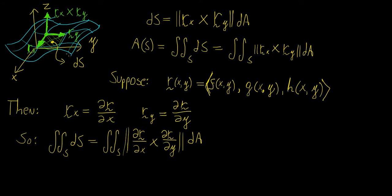The idea is that you want to have a more general description of the surface. One way to do that is by having a parametric equation of the surface — just in the same way that we had a parametric equation for a curve in three dimensions, which was a function of a single parameter t. For a surface, we need two parameters, because at any point we're going to have derivatives in two directions, oriented along the x-axis and the y-axis.